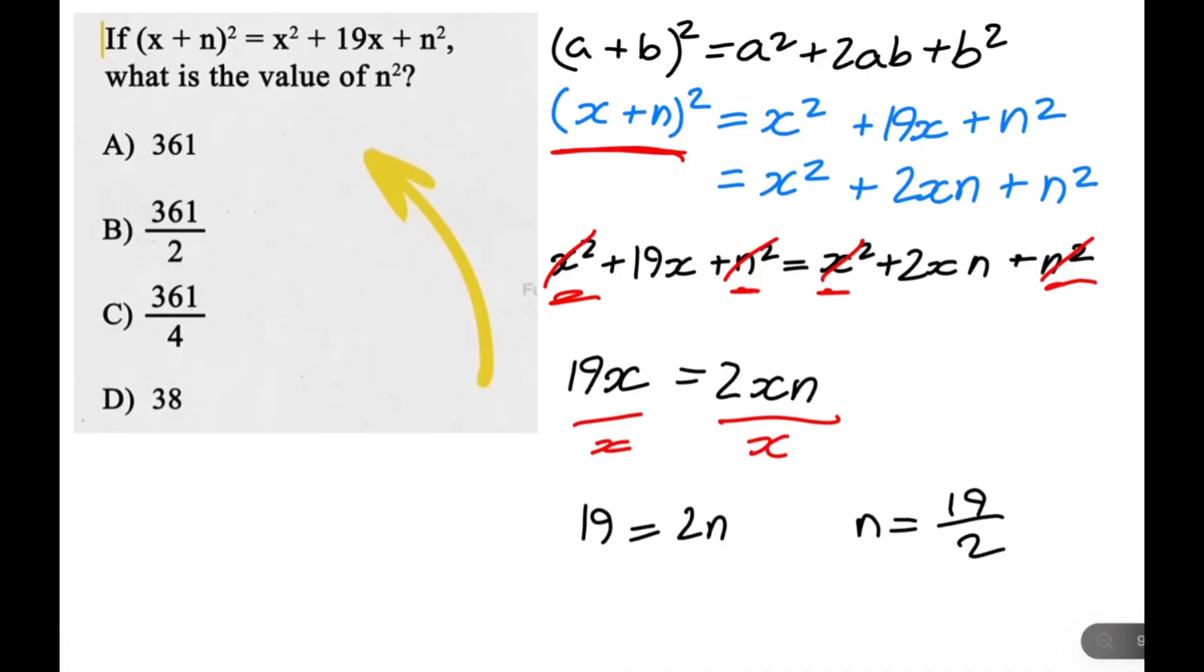19 squared is equal to 361. By the way, when you're squaring a fraction, you just square both sides. So you square the 19 and then you square the 2 and put it into a fraction. And that'll be your result.